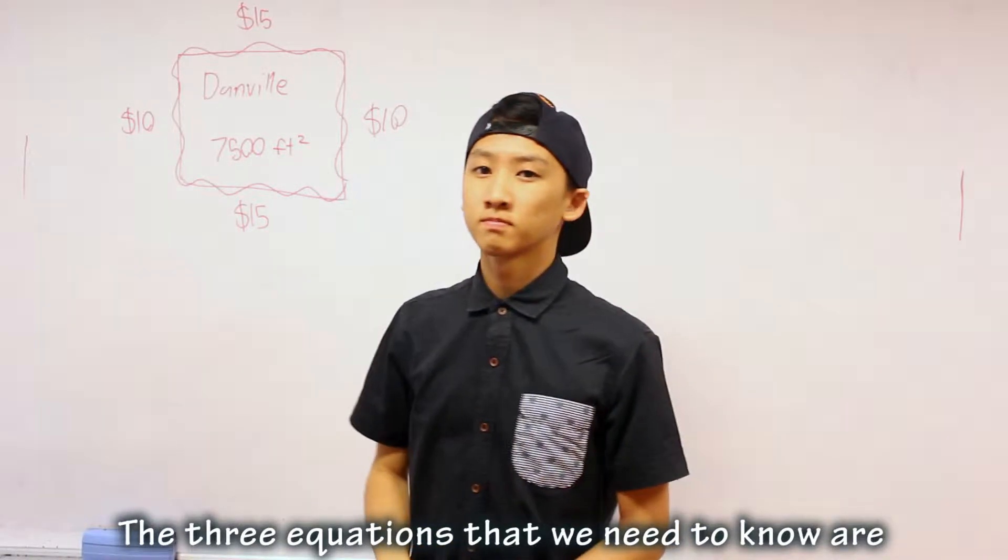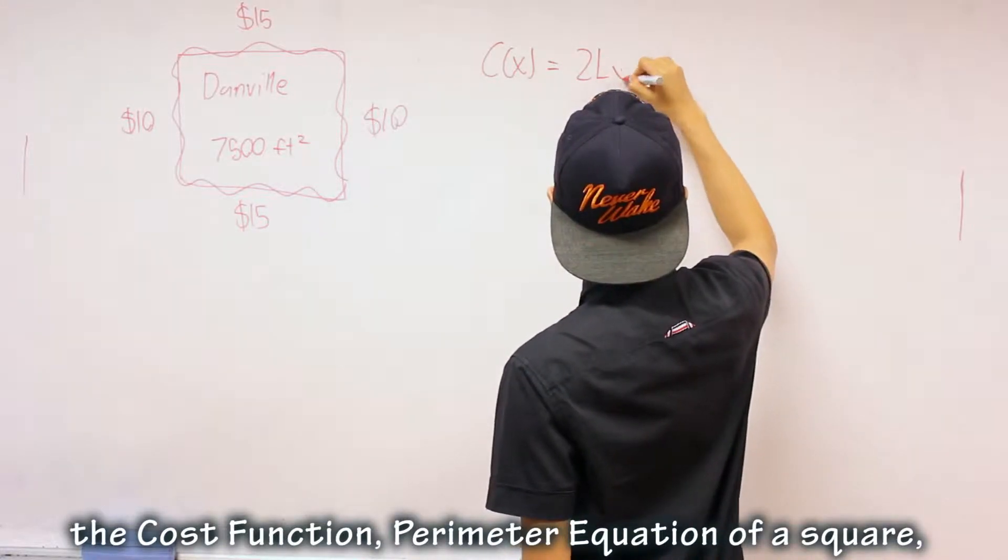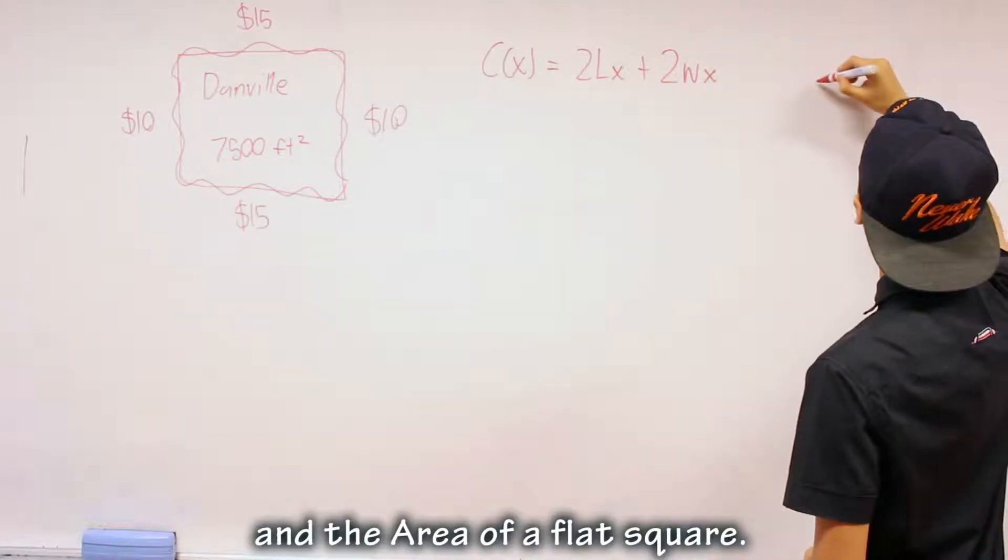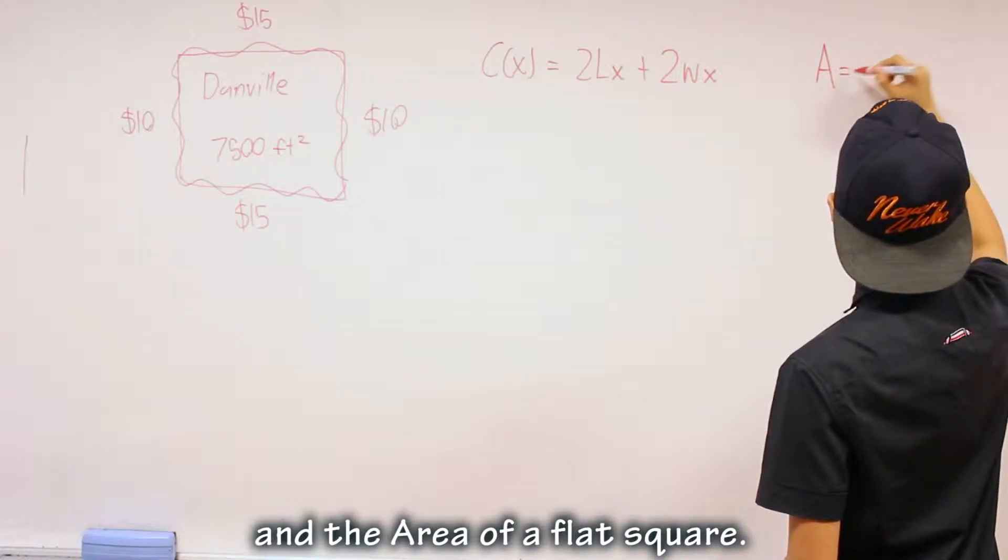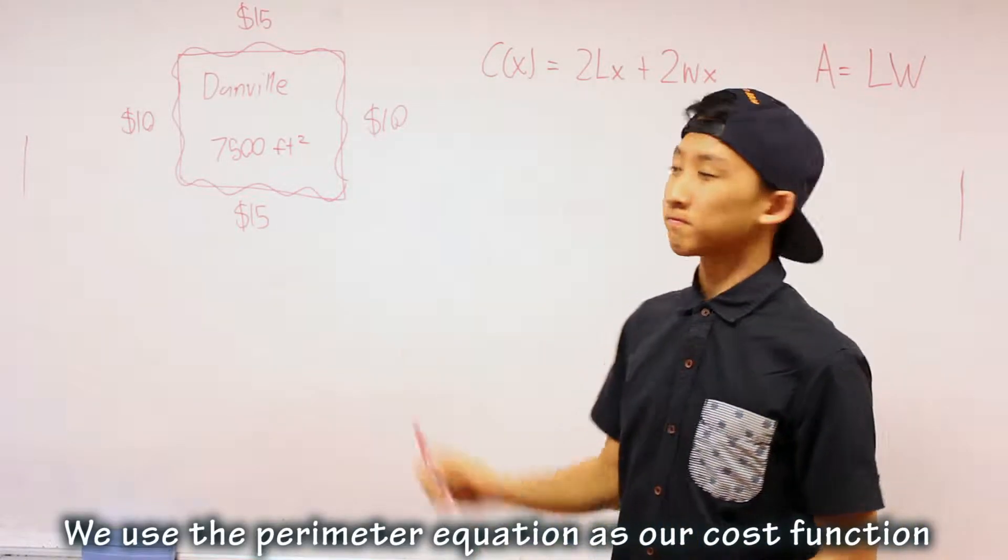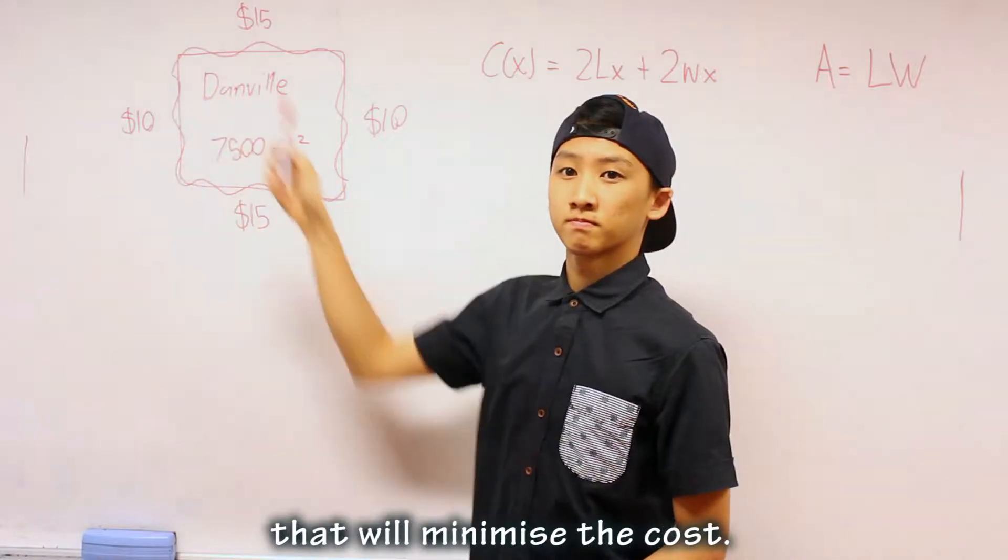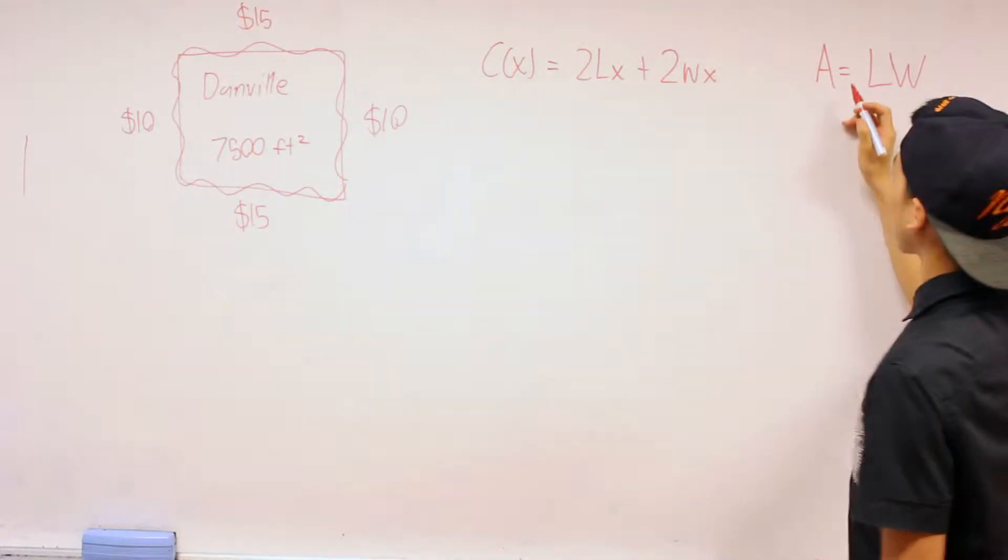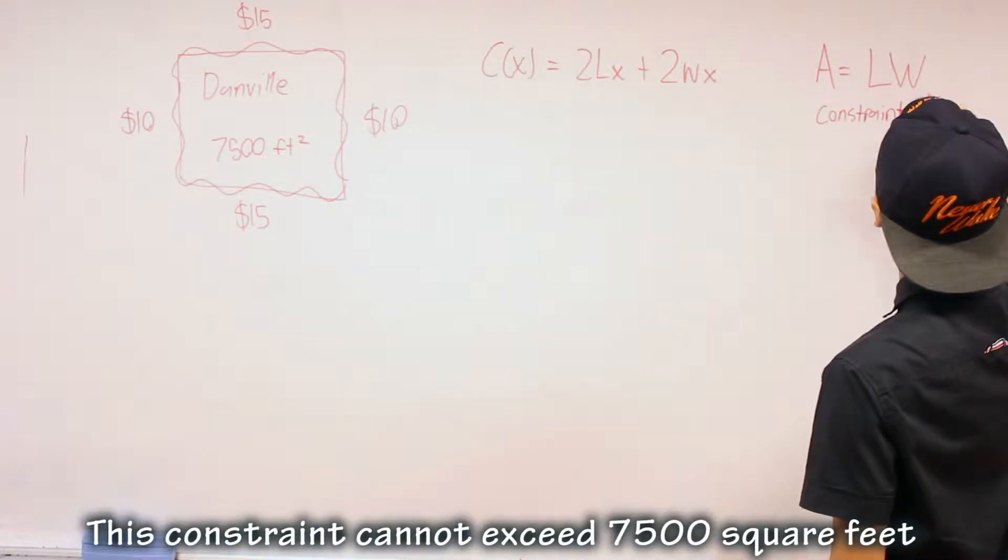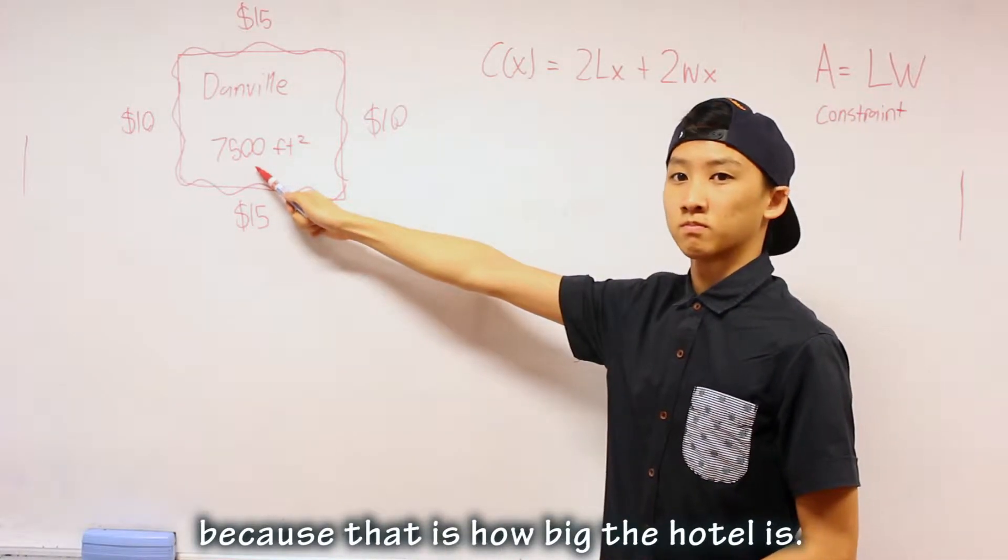The three equations that we need to know are the cost function, perimeter equation of a square, and the area of a flat square. We use the perimeter equation as our cost function because we want to know the dimensions of the hotel that will minimize the cost. But we have a limit which is also known as our constraint. This constraint cannot exceed 7,500 square feet because that is how big the hotel is.